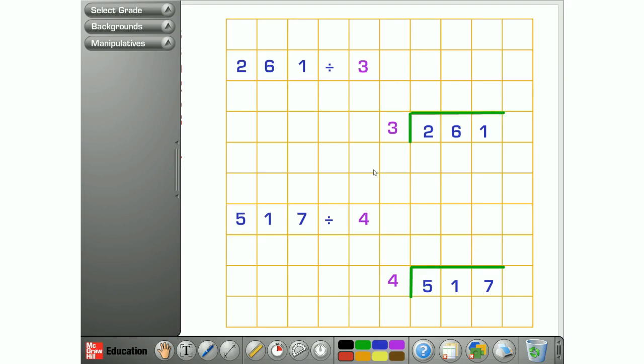In this video we're looking at division and specifically the short method or bus stop method of division. Here's our problem, 261 divided by 3, and hopefully you can see how it is set out.